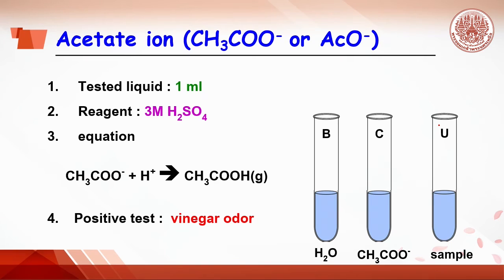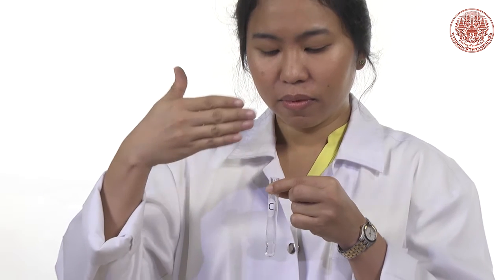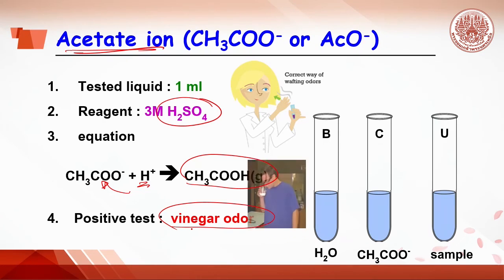Here is an example of spot test for finding acetate ion by adding tested liquid like water, acetate ion and sample. Then add the reagent sulfuric acid. As sulfuric acid is added, it reacts with acetate ion to get acetic acid, which has a vinegar odor. In this test, please be careful when testing the odor by wafting odor by hand. Do not directly smell the odor.